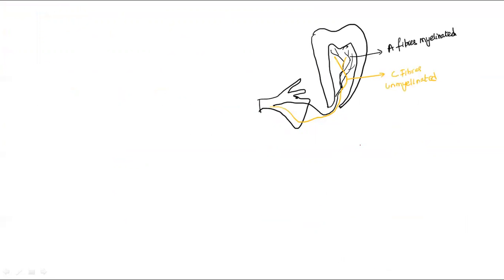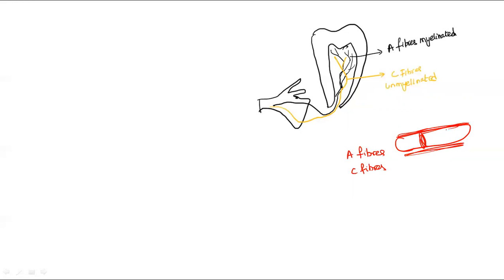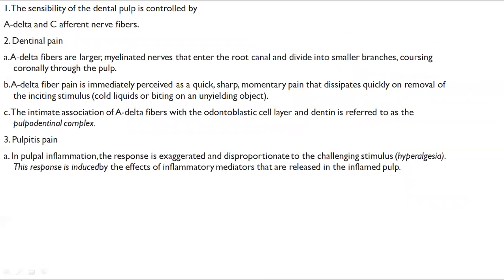There are two kinds of nerve fibres: A fibres and C fibres. A fibres are large and covered by a myelin sheath, whereas C fibres are smaller and unmyelinated. The sensibility of the pulp is controlled by A delta and C afferent nerve fibres.